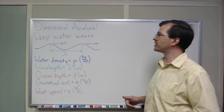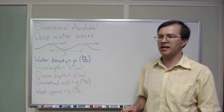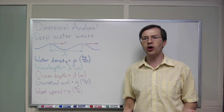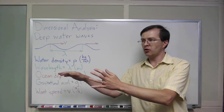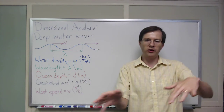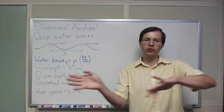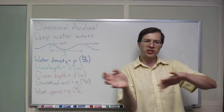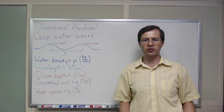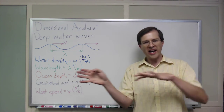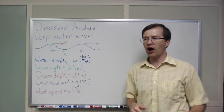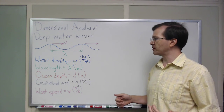The example I'm going to talk about is deep water waves. When you have waves sloshing up and down, flowing across the surface of the water in the deep ocean, how fast do those waves move from one place to another?